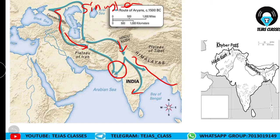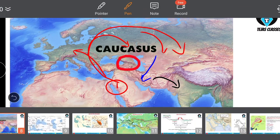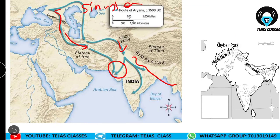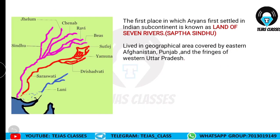You can see the Khyber Pass and Hindu Kush mountains on this map — these are the Himalayas, and this is India. A very important exam question asked numerous times: through which pass and which mountains did the Indo-Aryans enter India? The answer is the Khyber Pass and Hindu Kush mountains.